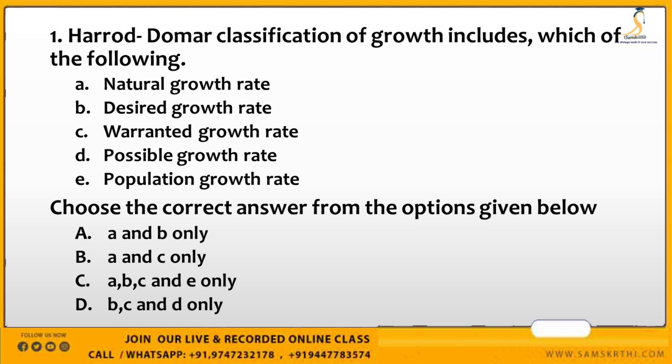Actual growth rate is the actually attained growth rate in the economy. We have a target, but what is actually achieved is the actual growth rate. This growth rate is affected by cyclical fluctuations in the economy.